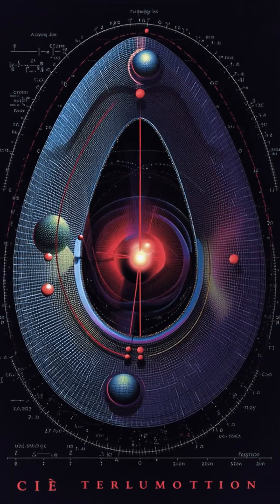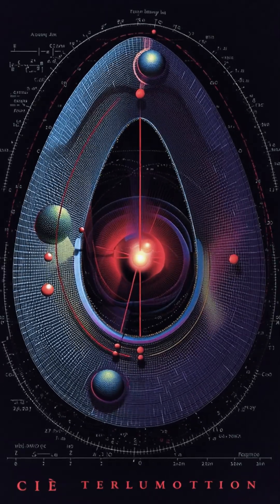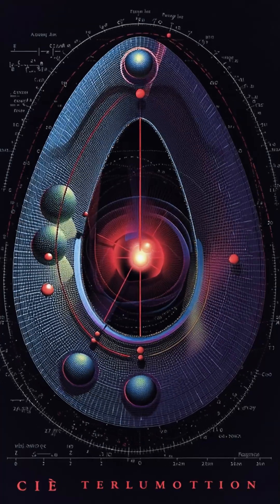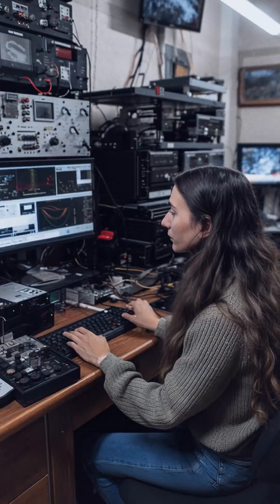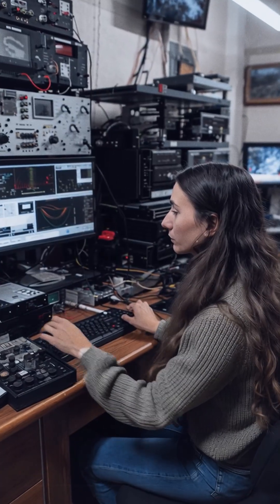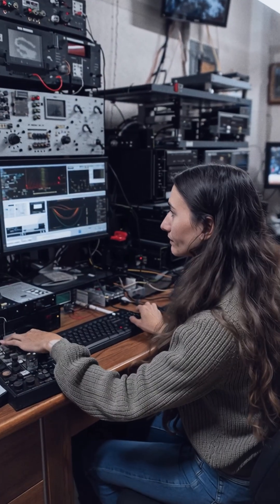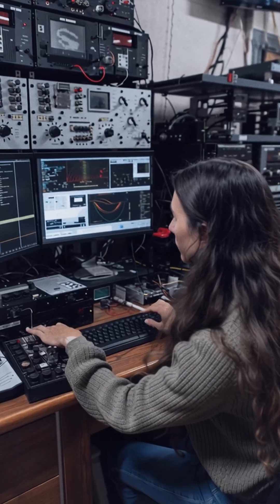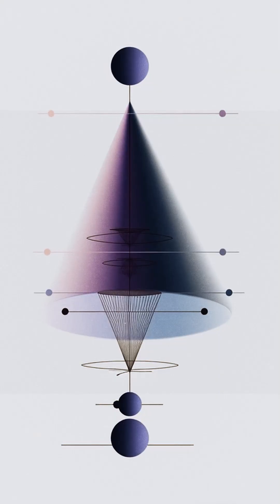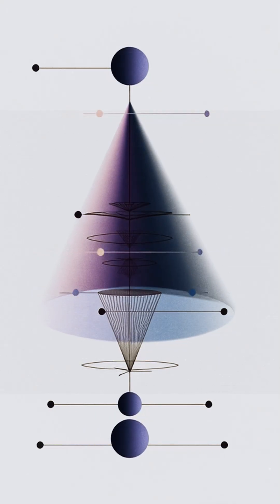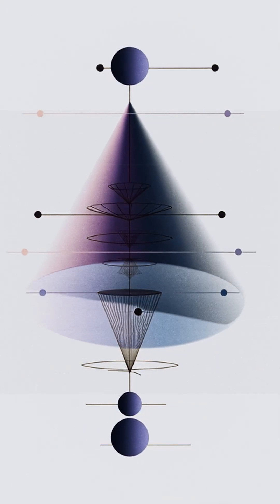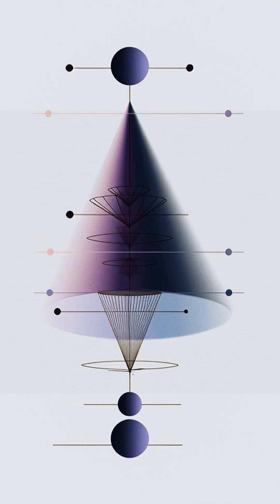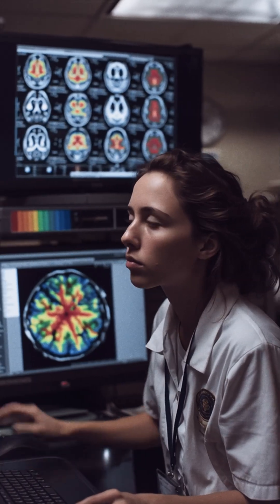Purple happens in a special corner of this system. Wavelengths that strongly stimulate both red and blue-sensitive cones, with little green, are interpreted by the brain as purple. There is no single wavelength that does this on its own, so the brain invents purple as a blend.